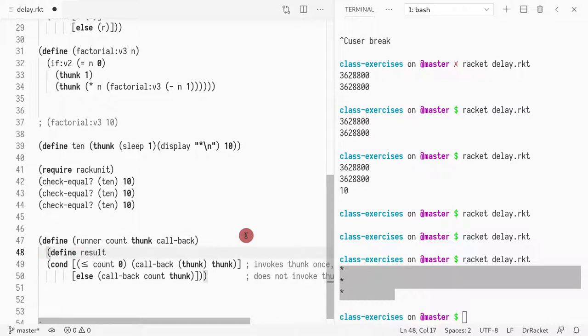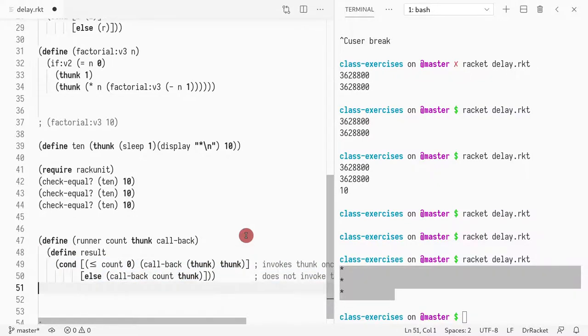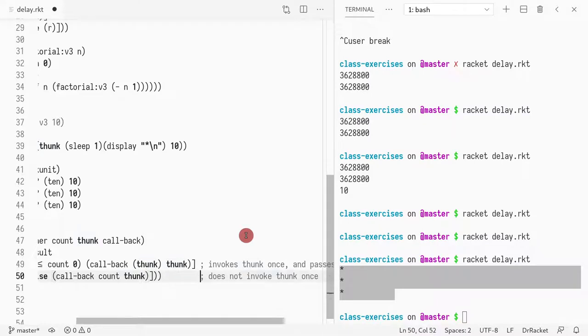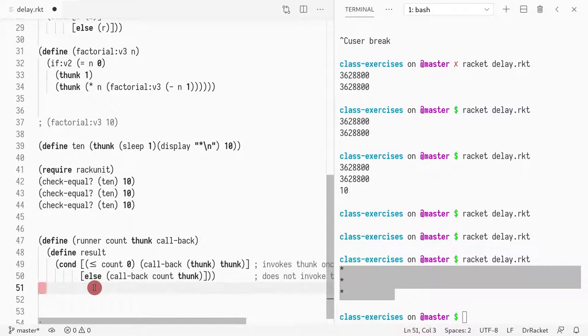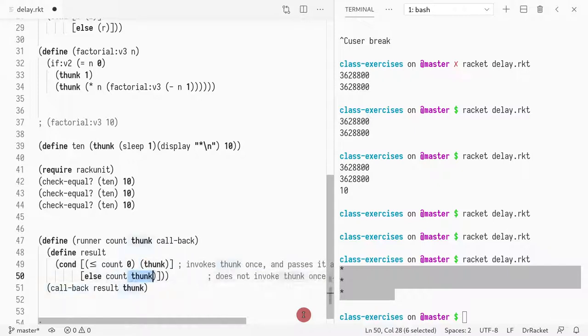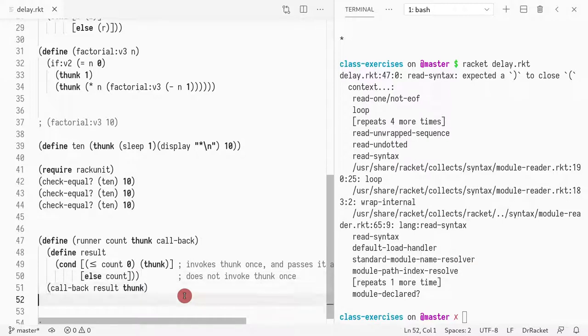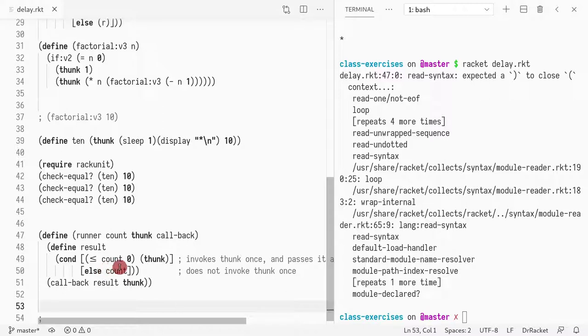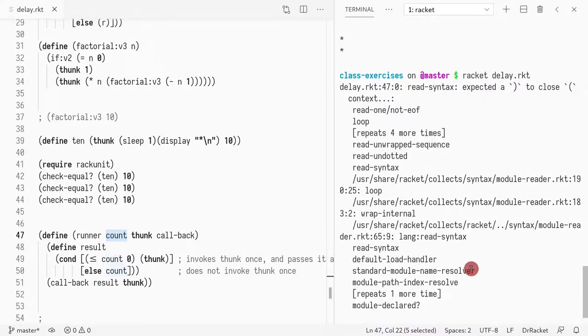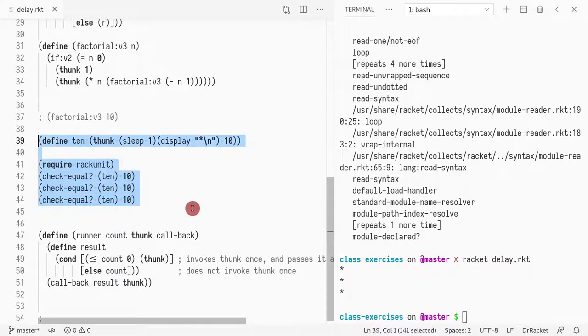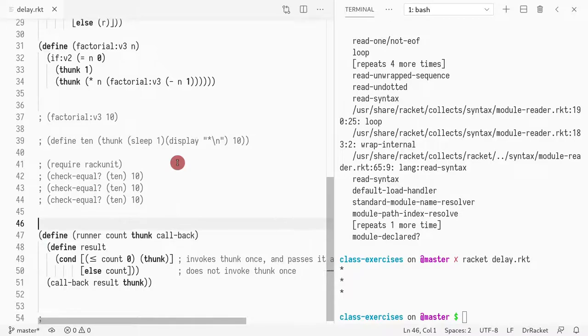Actually, we could kind of even simplify this and say that we want the results to be this, and then what we do with the result is call it. If the count is smaller than zero, you call the thunk; otherwise, you just call count. If I run this, I have some result, and then according to this count, I will execute the thunk or not. Here I'm running it three times, and it's kind of silly to run it multiple times. So now the question is, how do I cache the results?